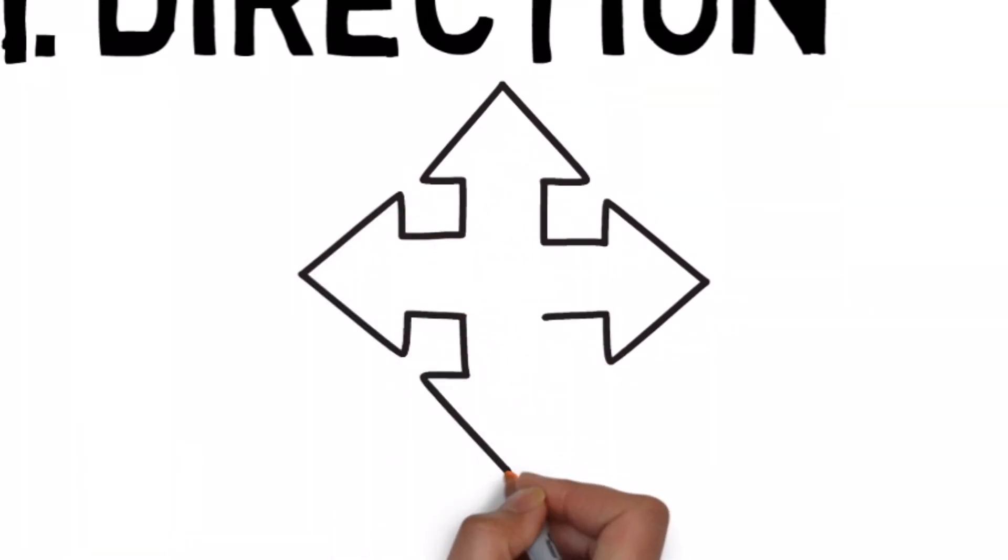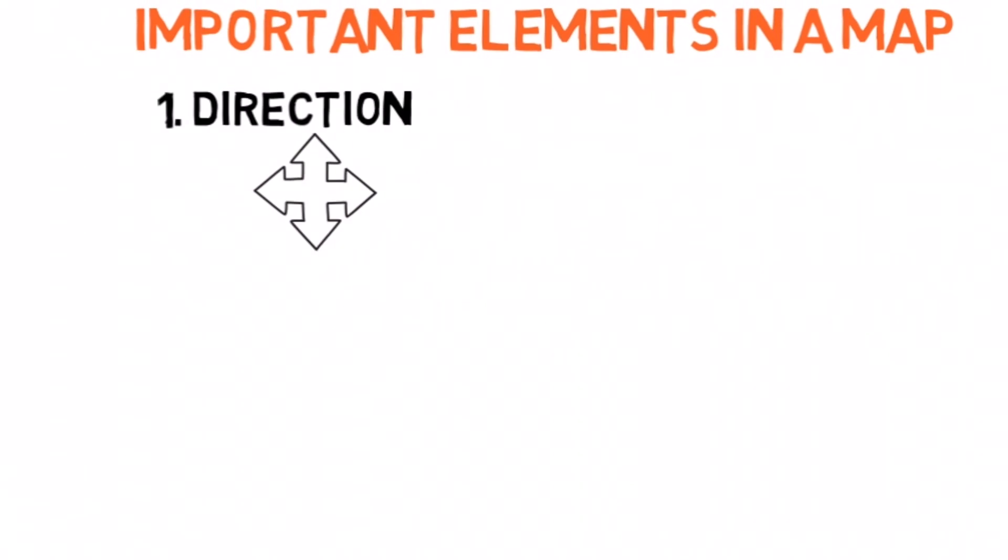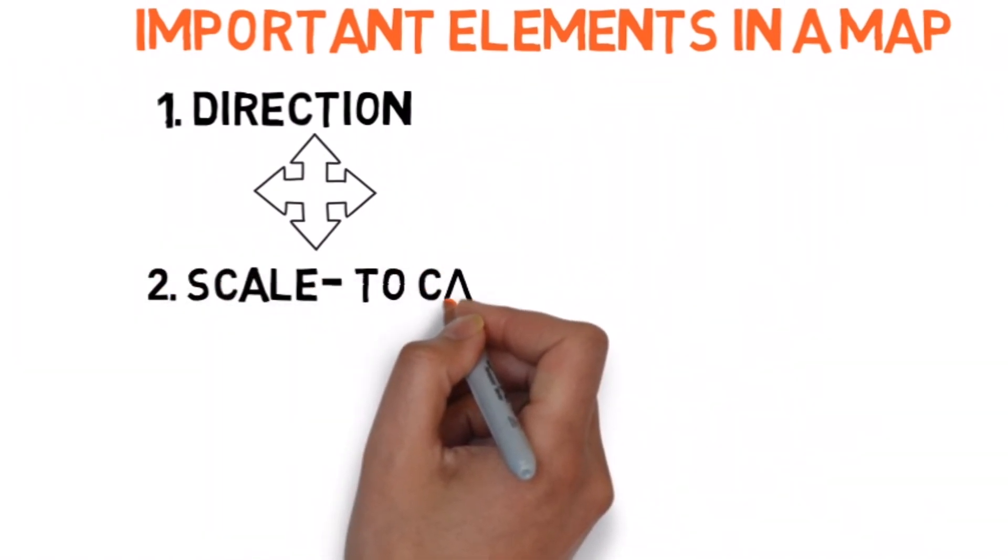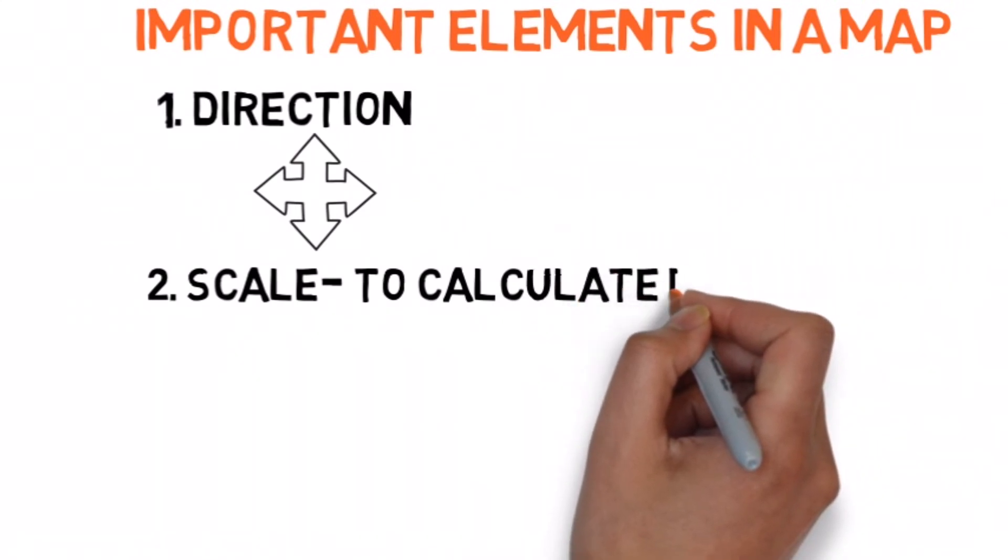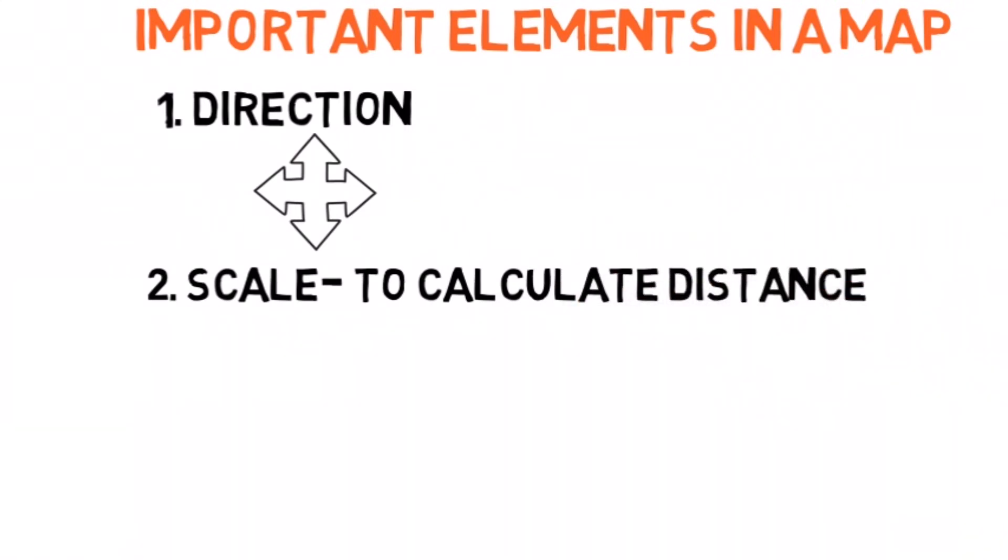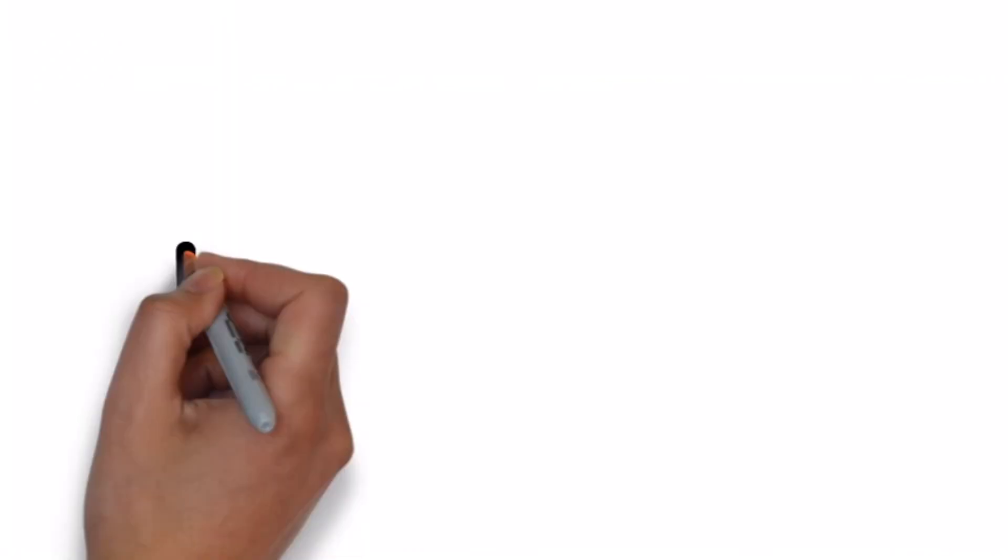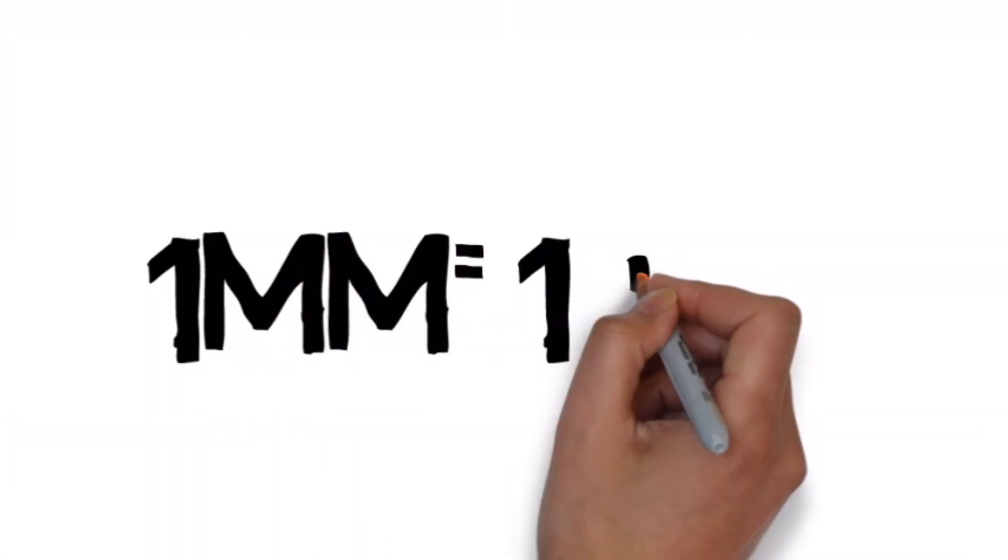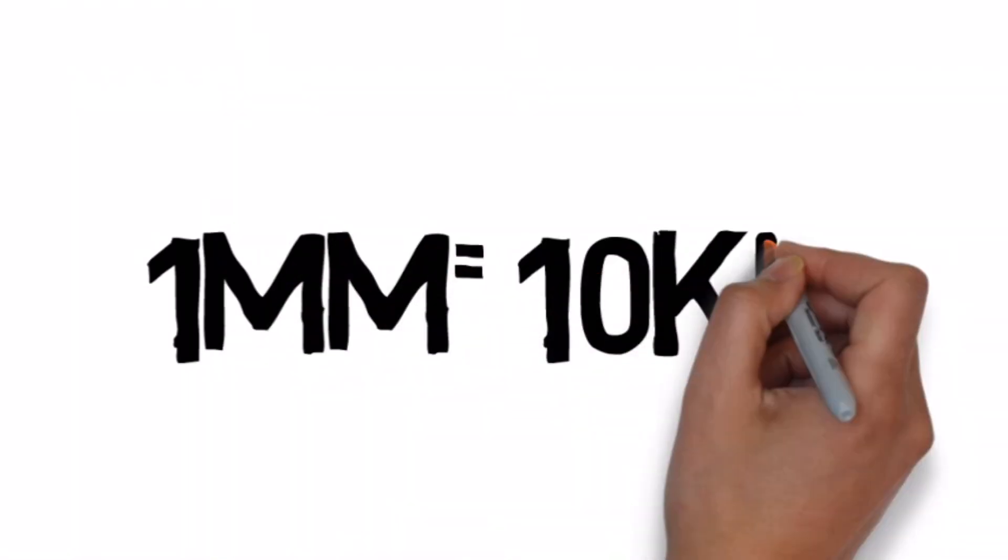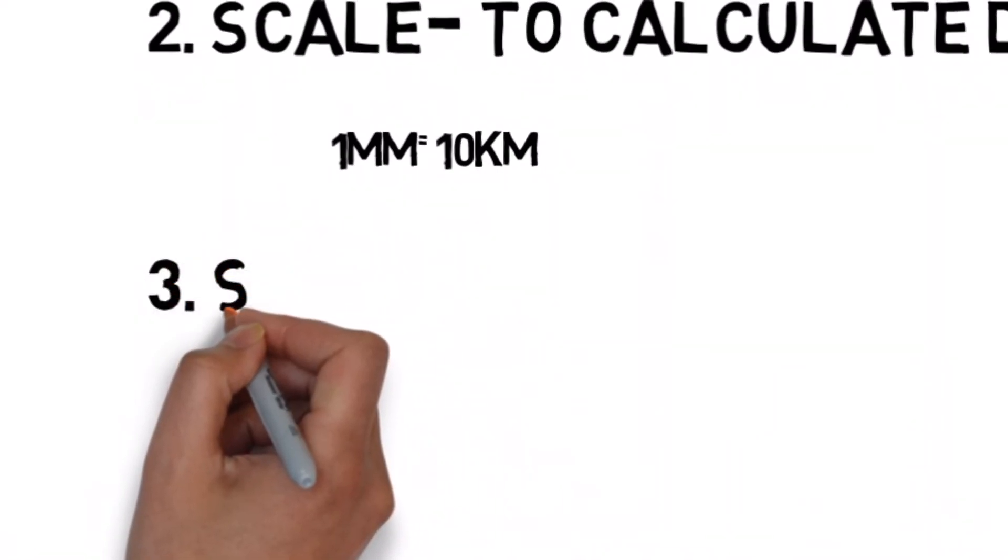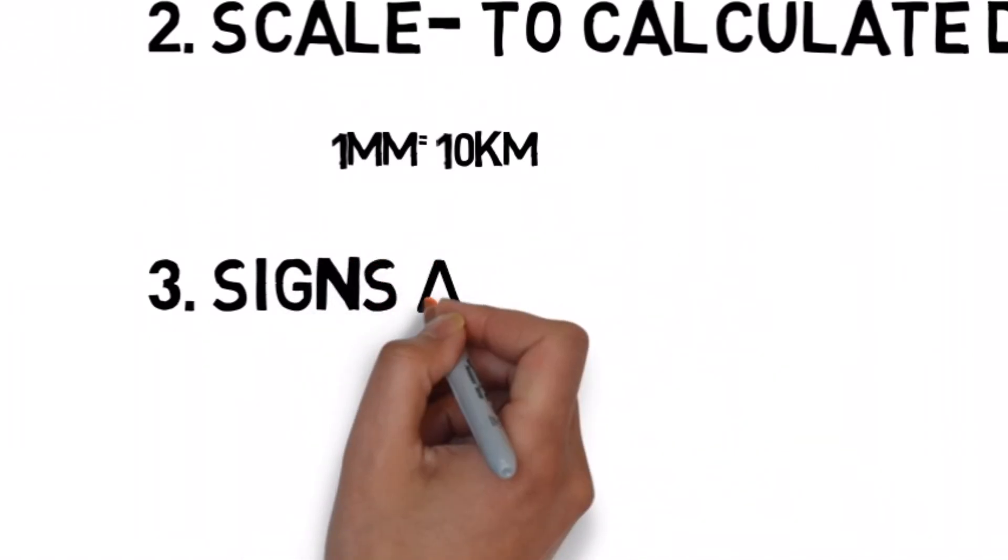The second one is scale. Maps are usually drawn to a scale. This enables people to calculate the actual distance on the land with the help of the scale mentioned below on maps. The cartographers pay special attention to this while making a map. The scale usually tells you how many millimeters or centimeters on the map is equal to how many kilometers on the ground.